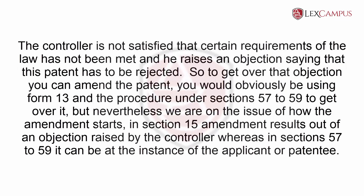A Section 15 amendment is an amendment to save a patent. The controller is not satisfied that certain requirements of the law have been met, and raises an objection saying that the patent has to be rejected. To get over that objection, you can amend the patent — you would use Form 13 and the procedure under Sections 57 to 59. Nevertheless, the key distinction is how the amendment starts: in Section 15, the amendment results from an objection raised by the controller, whereas in Sections 57 to 59, it can be at the instance of the applicant or the patentee.